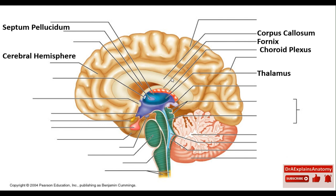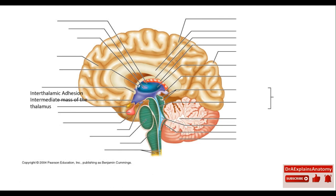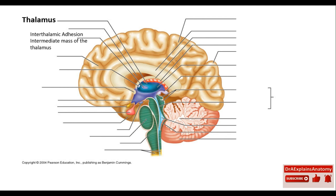This is the thalamus. The thalamus is part of the diencephalon. Inferior to the thalamus, we have the hypothalamus. This right here is the interthalamic adhesion, also called the intermediate mass of the thalamus. We can see part of the thalamus in green.